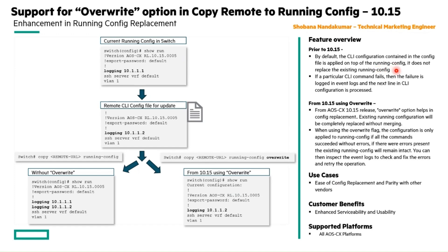If the command fails, the failure is recorded in the event logs and then the next line in the configuration file is executed. From release 1015, we have this override option. The override option in the 1015 release onwards helps with config replacement — the current running configuration will be totally replaced without merging.